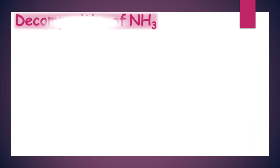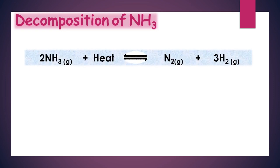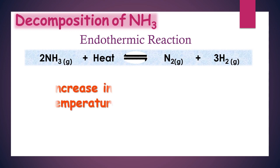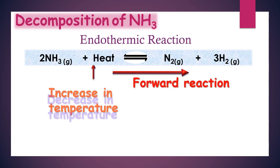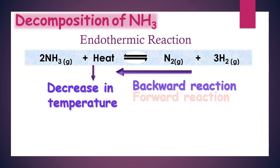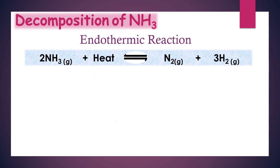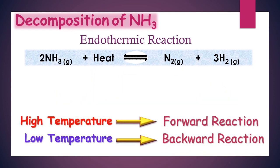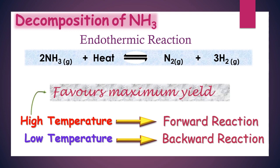However, the decomposition of ammonia back to the reactants involves an endothermic reaction. If heat is considered as one of the reactants, an increase in temperature would favor the forward reaction, and a decrease in temperature would favor the backward reaction. Thus, in endothermic reactions, high temperature favors the forward reaction and results in the maximum yield. The temperature affects the equilibrium position differently in endothermic versus exothermic reactions.